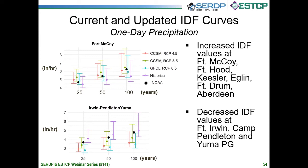The results include IDF curves under current and future conditions as well as NOAA estimates for comparison. As an example, you can see in these figures that the IDF values are expected to increase in Fort McCoy under both the moderate and high climate scenarios, while they may decrease in areas like Fort Irwin, Camp Pendleton, or Yuma — which is the southwest side of the country.